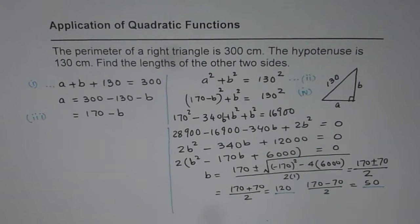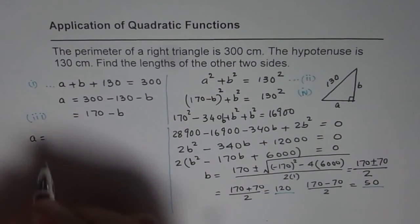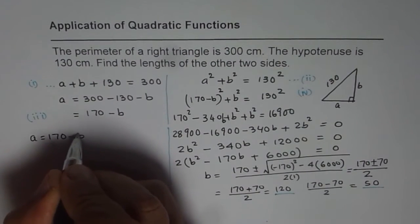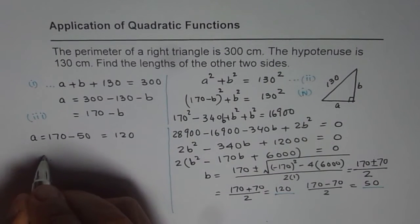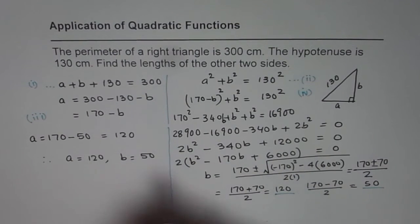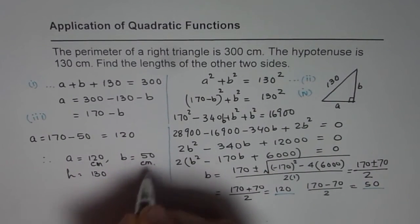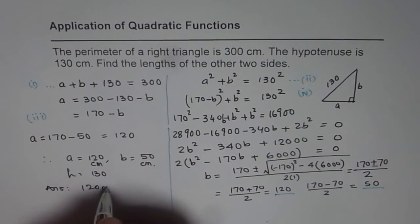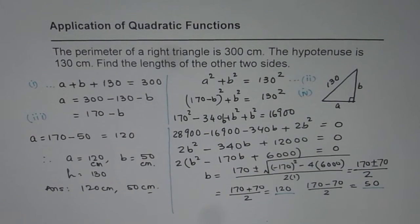Let us substitute both values of B and find A. If B equals 50, then A equals 170 minus 50, which is 120. So one side is 120 and the other is 50. Therefore, the two sides are 120 centimeters and 50 centimeters, and the hypotenuse is 130 centimeters. I hope the steps are clear to you. That is how we solve these questions. Thank you and all the best.